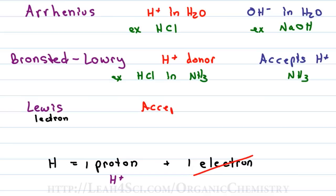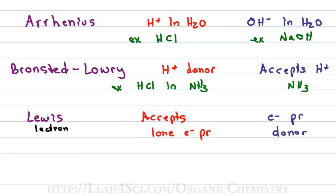A Lewis acid is something that accepts a lone pair of electrons—E- is how I'm going to refer to electron and PR for pair—and the Lewis base is something that donates the lone pair of electrons. So we'll call it an electron pair donor.